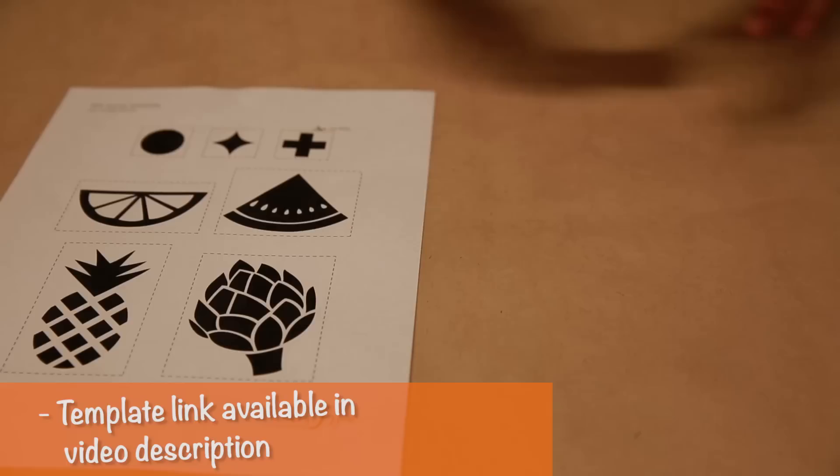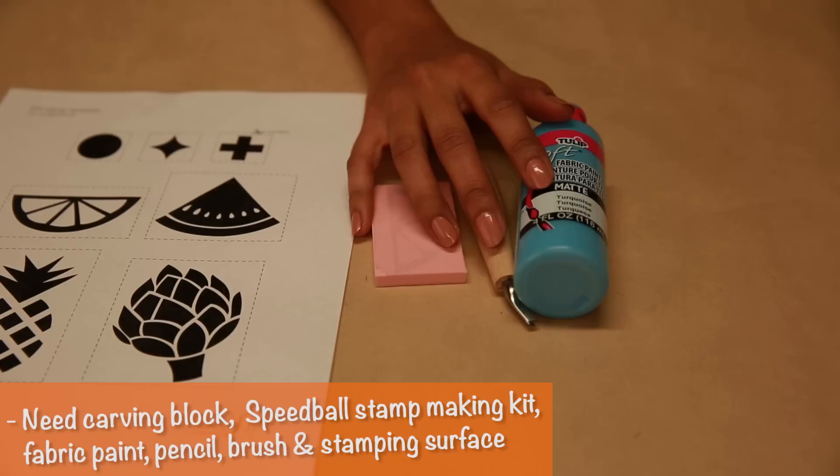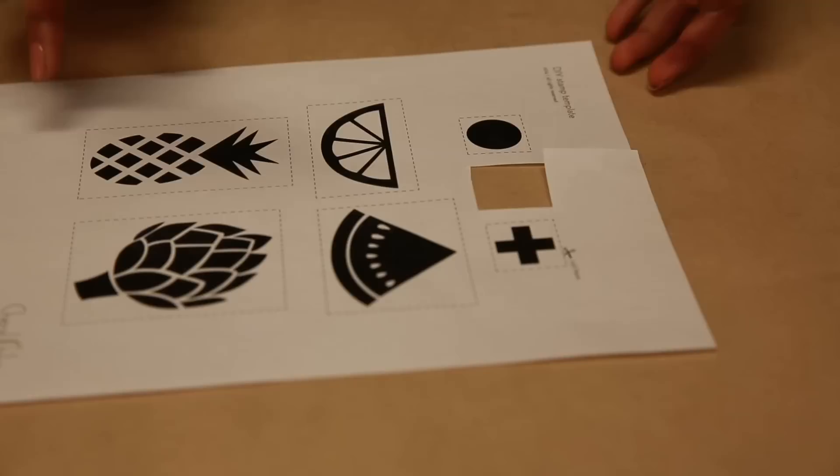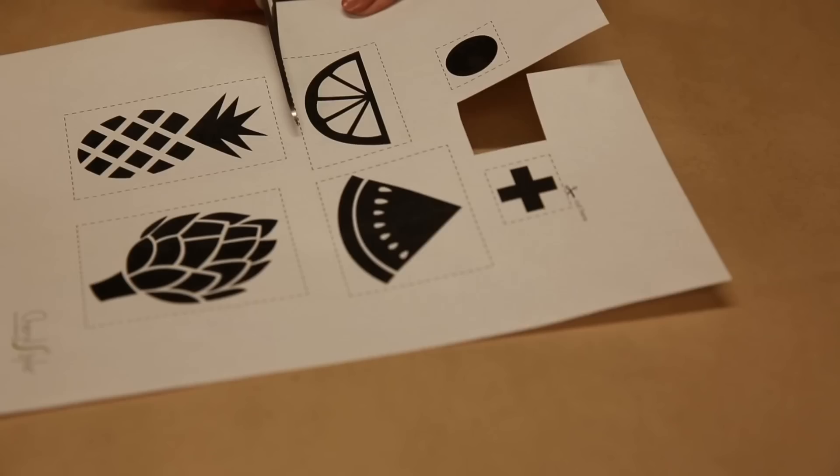What you'll need is a template, and you can get this at CherylStyle.com, a carving block, a speedball cutter, fabric paint, a pencil, and a brush. You'll also need something to stamp on. Today I'm going to stamp on a tea towel.